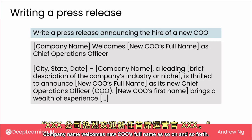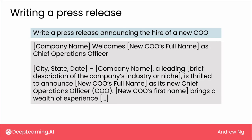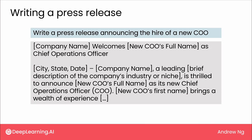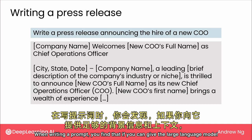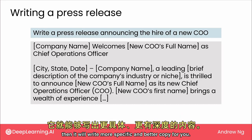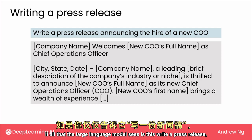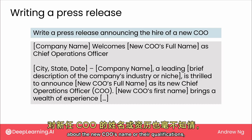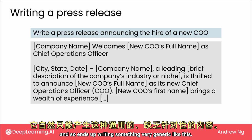"Company name welcomes new COO's full name" — and so on and so forth. This is a pretty generic press release. When writing a prompt, you find that if you can give the large language model more context or more background information, then it will write more specific and better copy for you. If all the large language model sees is "write a press release", at this point in time it doesn't know anything about your company, about the new COO's name or their qualifications, and so it ends up writing something very generic like this.